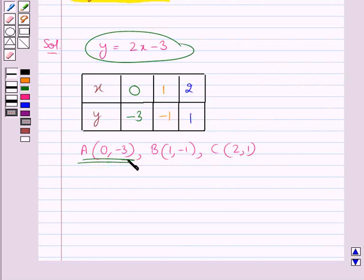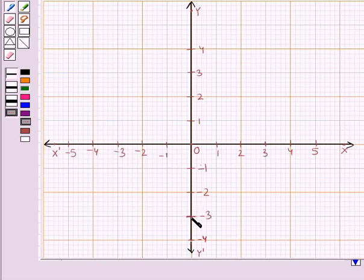Consider this point A with coordinates 0 minus 3. First we will plot this point. Now as you can see the x coordinate is 0, so this point will lie on the y axis. This is minus 3 point on the y axis. This point would be the point A with coordinates 0 minus 3.